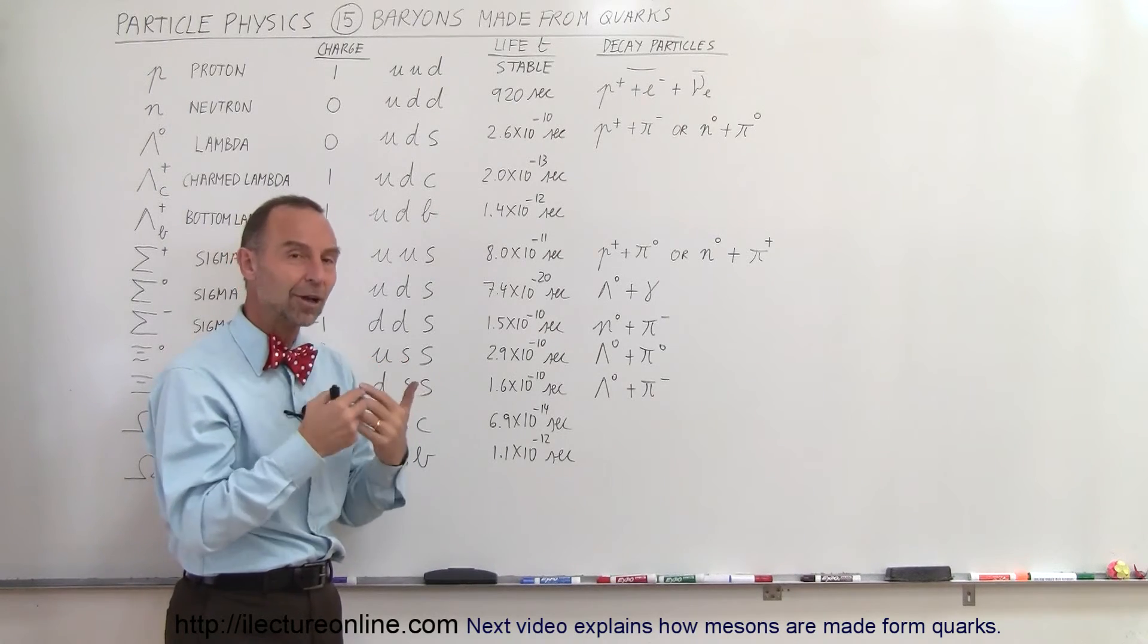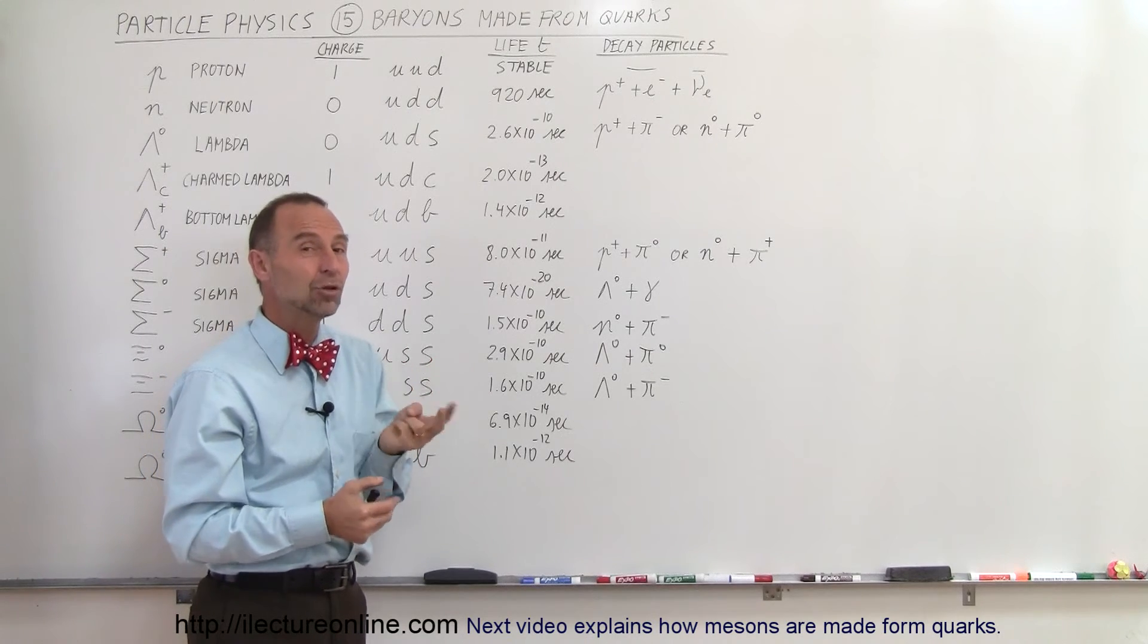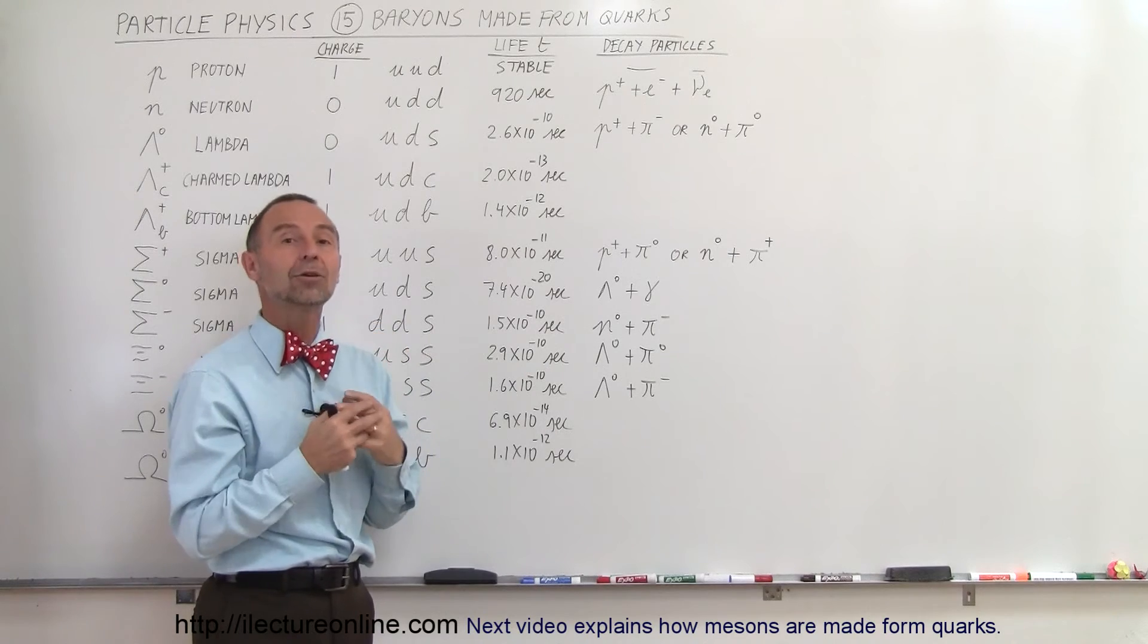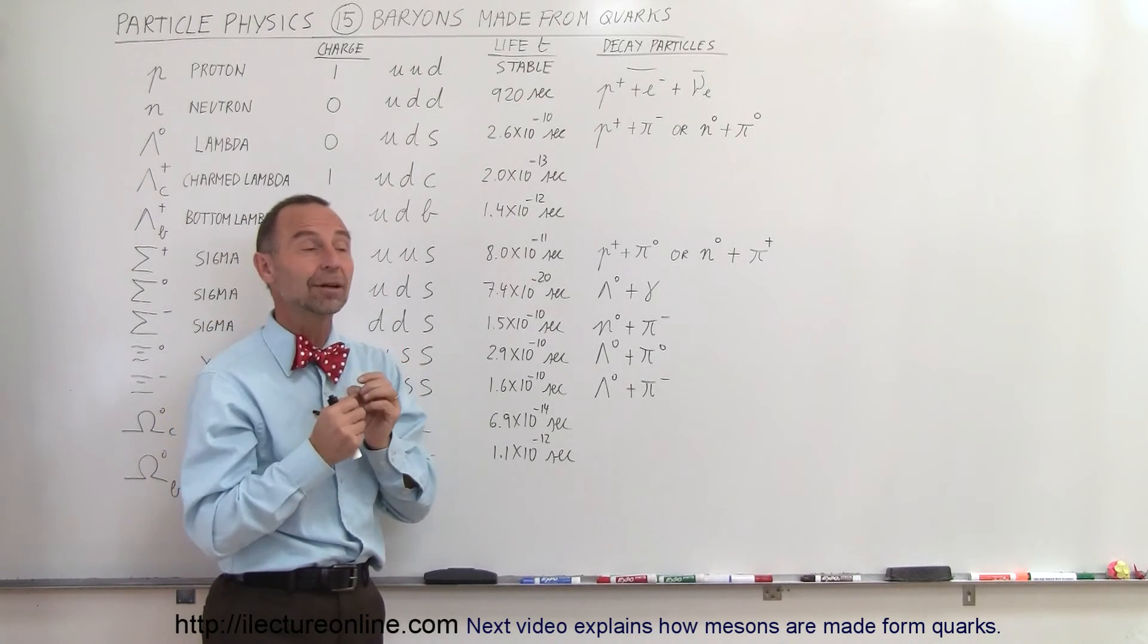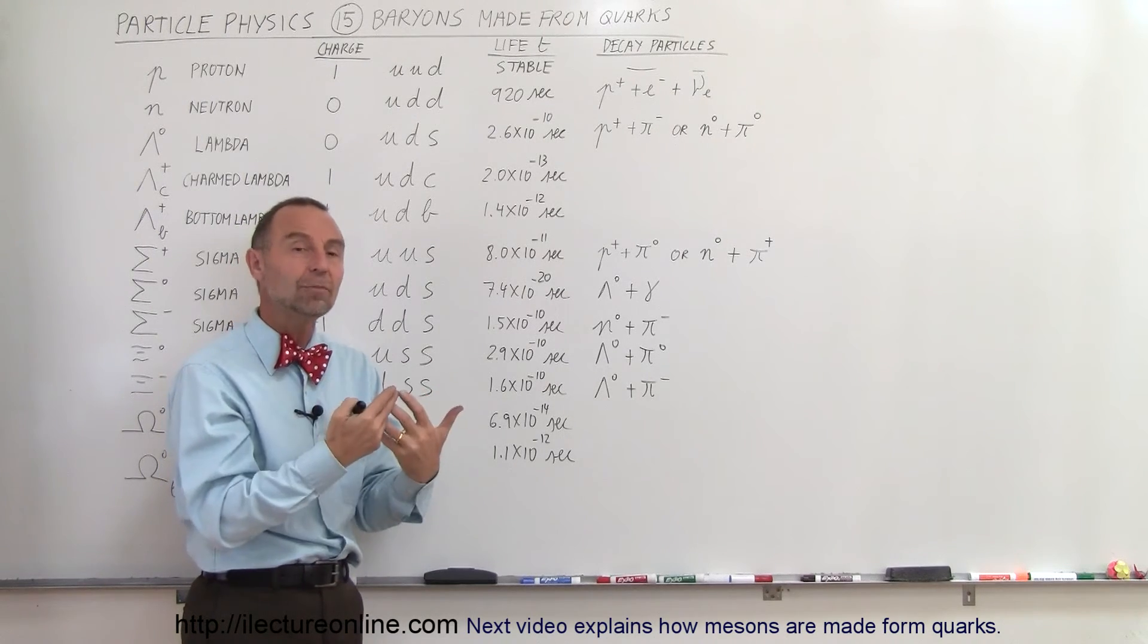Of the several hundred baryons that can be made by quarks, only one is stable. The second one, neutrons, are somewhat stable. Those two particles make up pretty well all the visible matter in the universe. And all the other particles are just there very momentary. So you say, well, are they important?